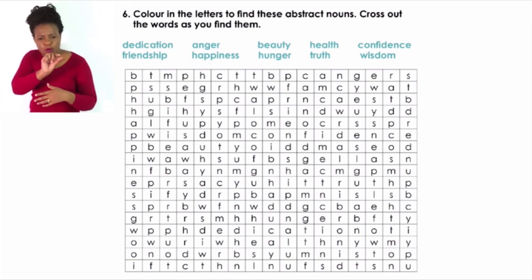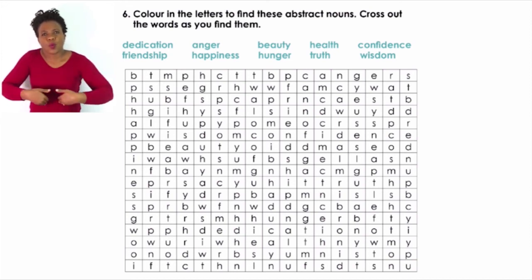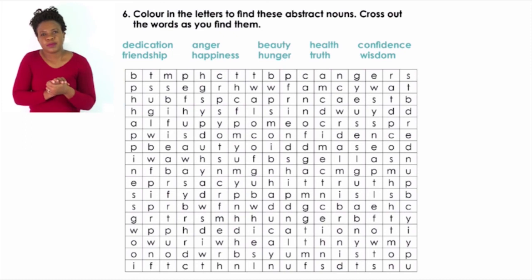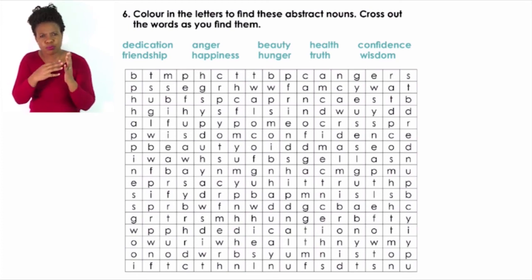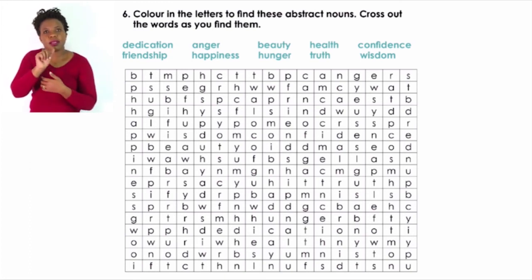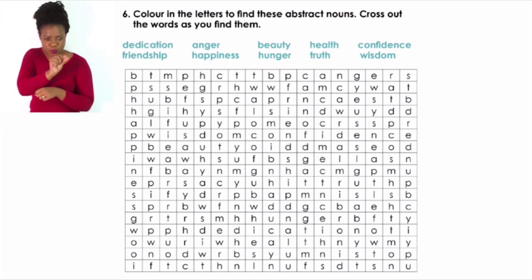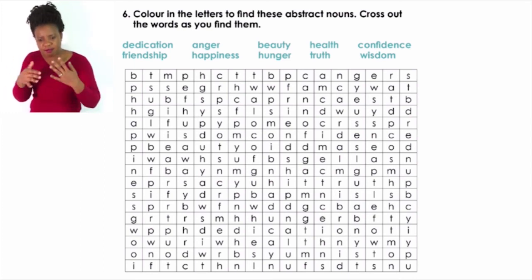As an example: in the first column reading downwards you can see the abstract noun 'happiness' — color that. In the first line across there is 'anger' — color that as well. Try to identify all those nouns within the puzzle. Turn to page seven for the last activity: read the fable and answer the questions that follow.